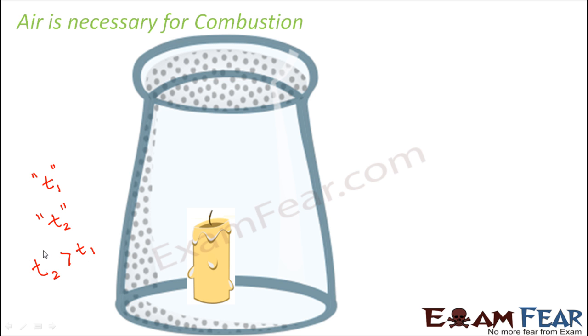But what we observe is t2 is greater than t1. That means the time for which the candle lighted in the second case is more than the time for which the candle was on in the first case. Why? That is because in the second case the glass was bigger, and in the first case it was a small glass.